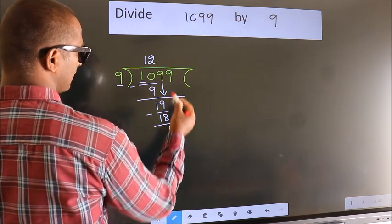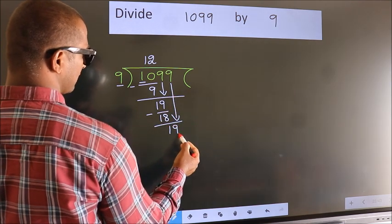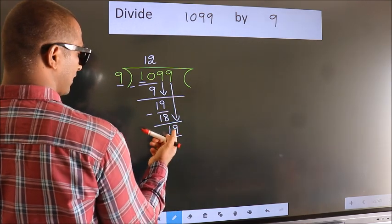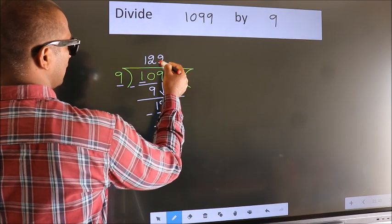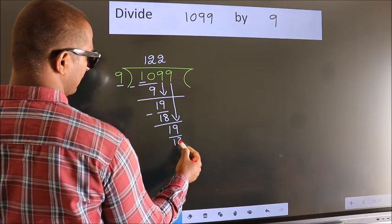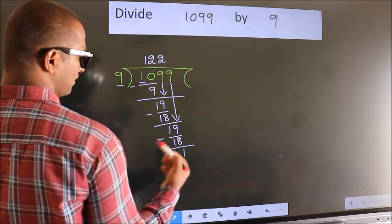After this, bring down the next number. So, 9 down, making 19. A number close to 19 in the 9 times table is 9 twos, 18. Now we subtract. We get 1.